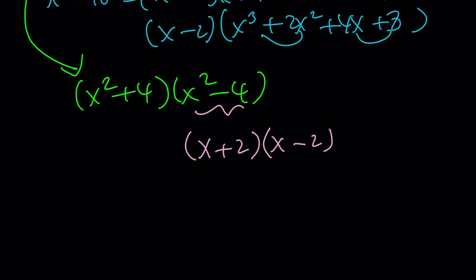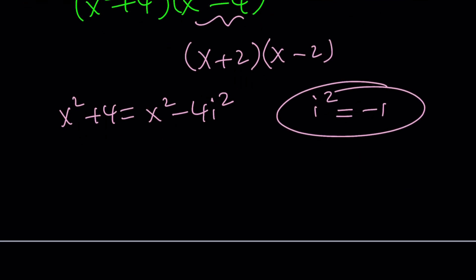Now, what about x squared plus 4? It's not a difference of two squares. Well, it kind of is if you think about in the complex world. So x squared plus 4 is actually x squared minus 4i squared, because i squared is equal to negative 1. Remember that? So, this is indeed a difference of two squares in the complex world. So we can write this as x plus 2i times x minus 2i. Awesome.